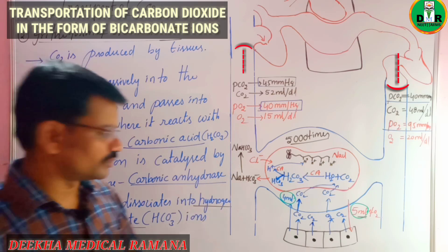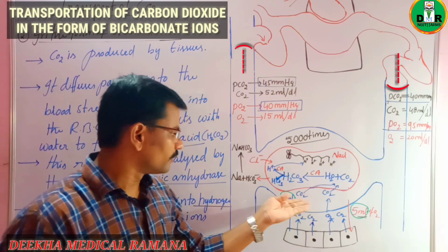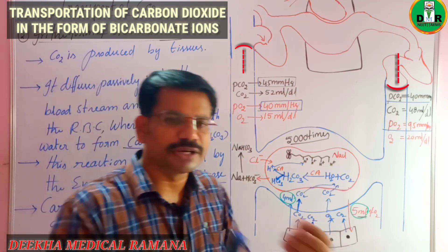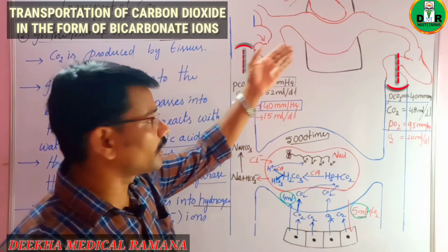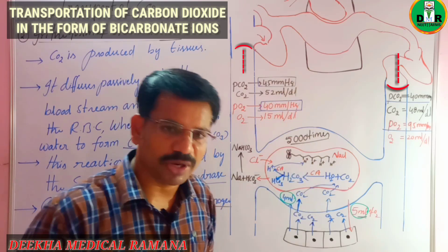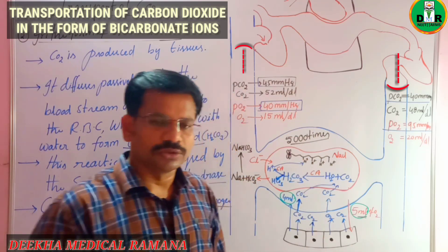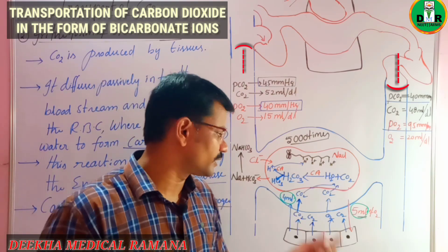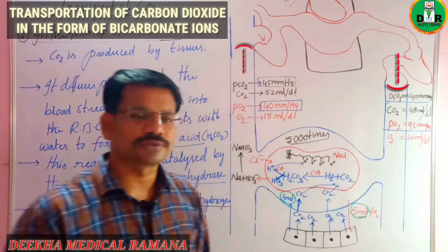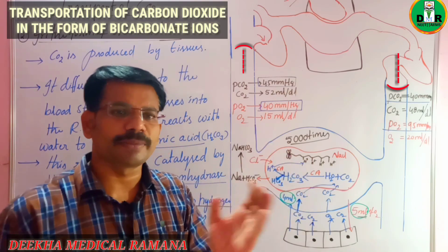The first is in the form of a physical solution — about 5 to 7% of carbon dioxide is dissolved in the liquid plasma and transported to the pulmonary capillaries where diffusion occurs. The second form is as bicarbonate ions, which carry the maximum amount of CO₂. The remaining 20 to 25% is transported by hemoglobin, which we call carbamino hemoglobin.